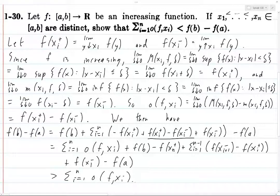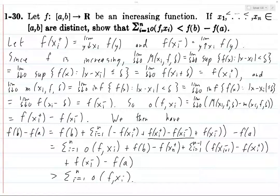So when we drop all of these non-negative terms, we get that the sum is greater than or equal to what we wanted. Basically, f is an increasing function that could have jumps, and what this says is that the sum of the jumps at the x_i's is less than the total jump of the function between a and b. This makes sense for an increasing function, and now we've proven it.